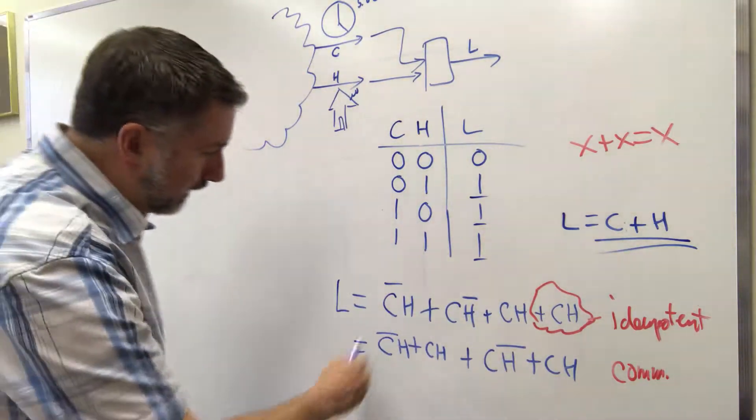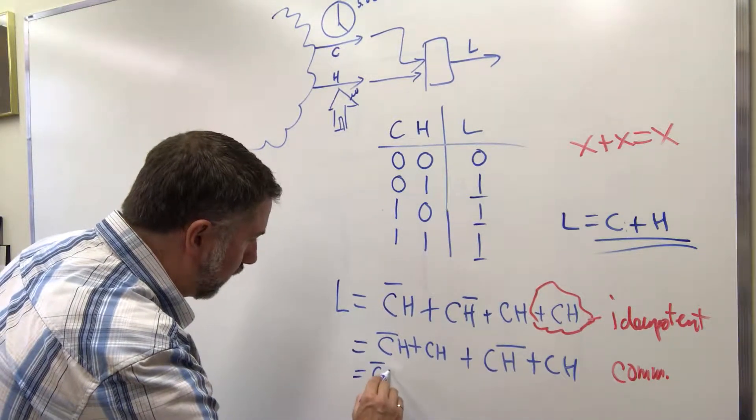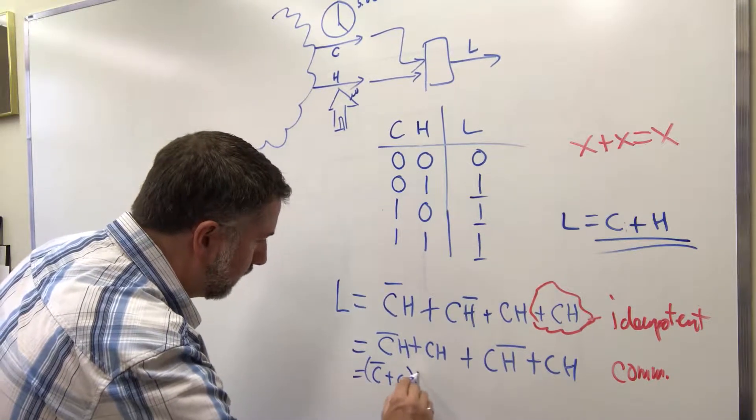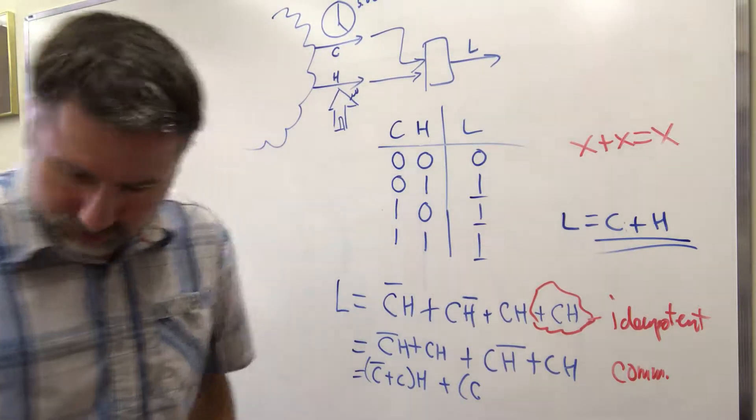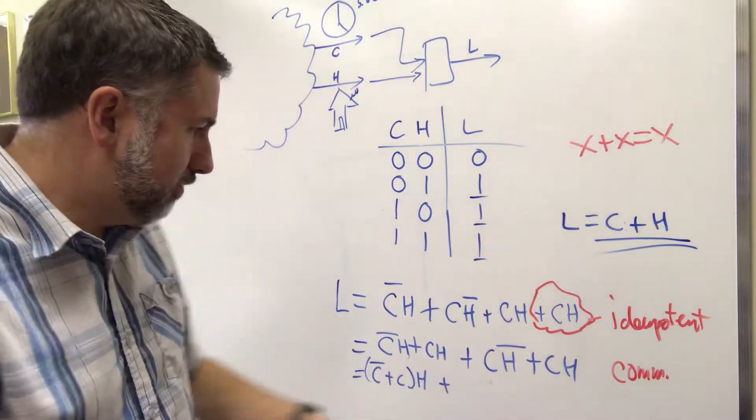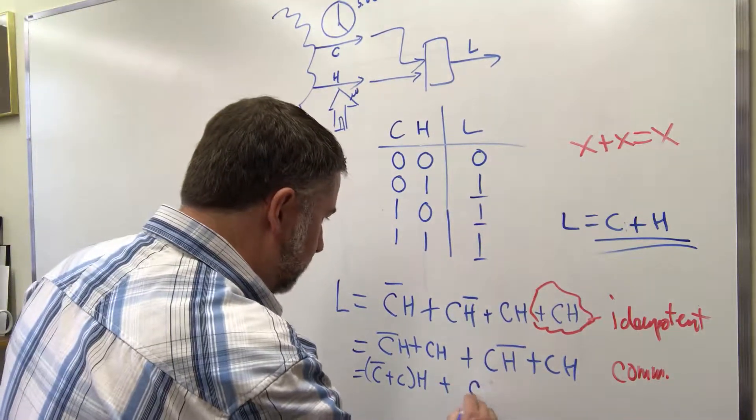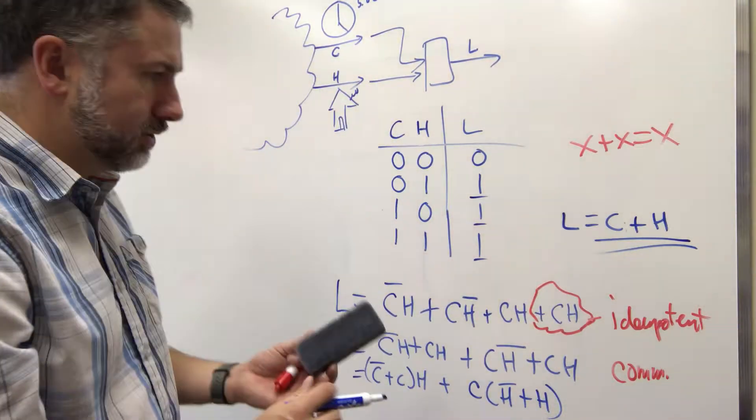Then what we're going to do is we're going to collect these together. This is C prime or CH or C. Pull out the H from here, and I pulled out the C from here. CH prime or H. And this is distributive.